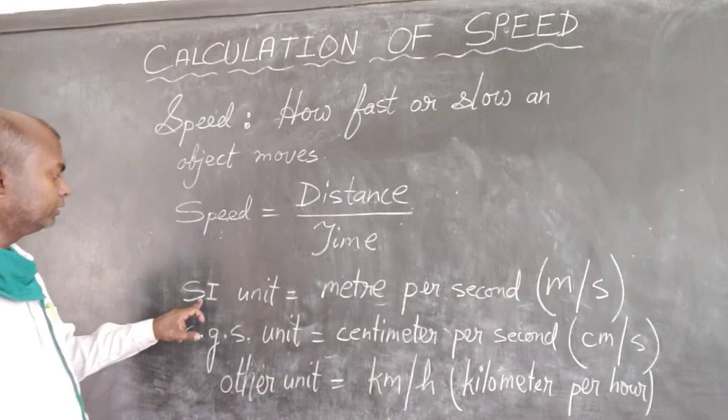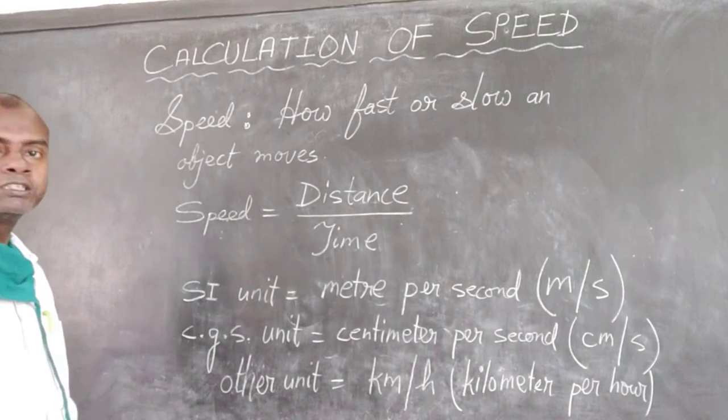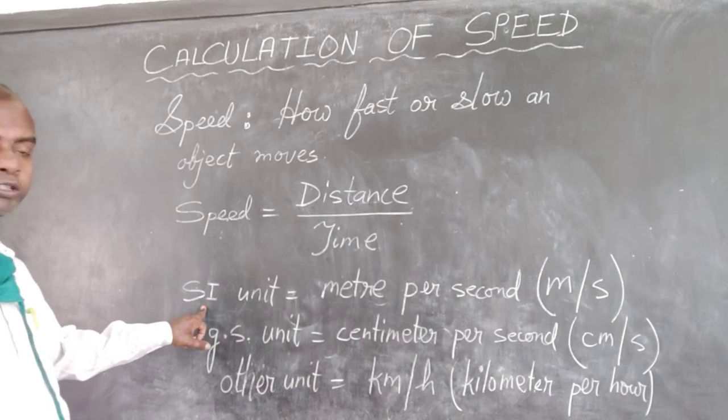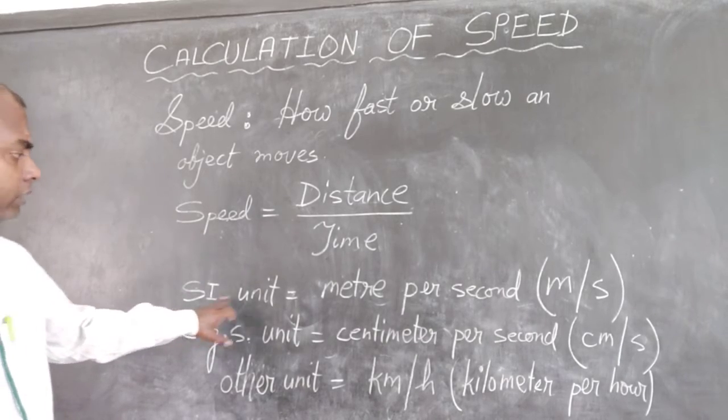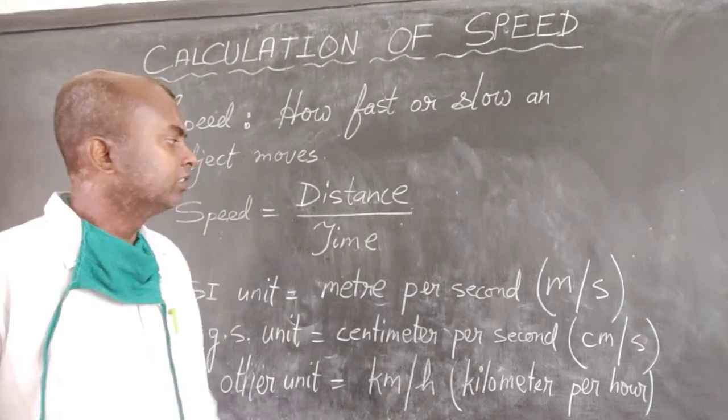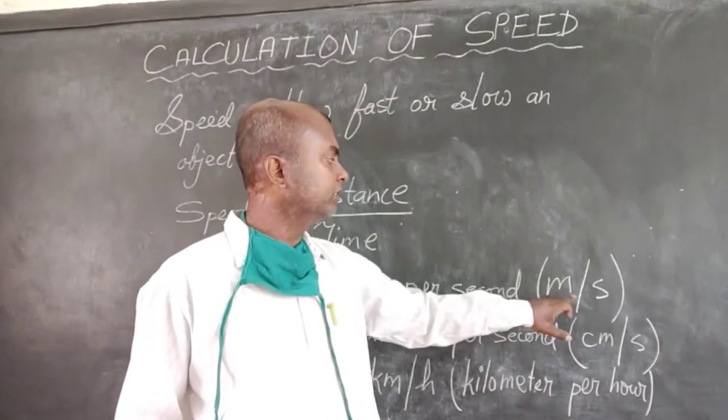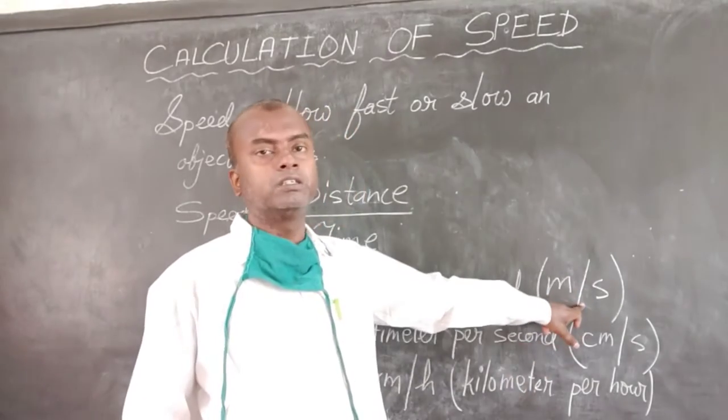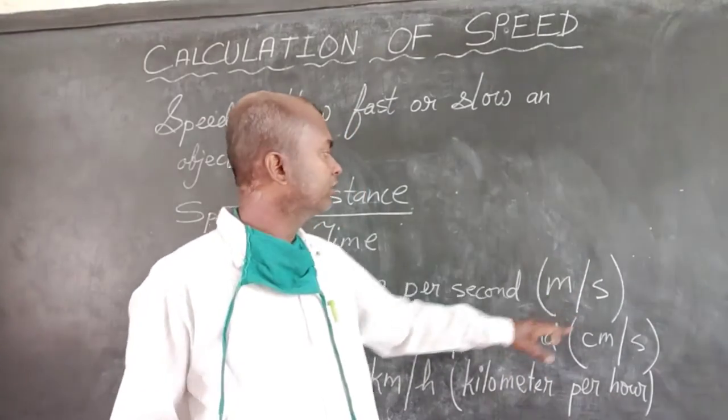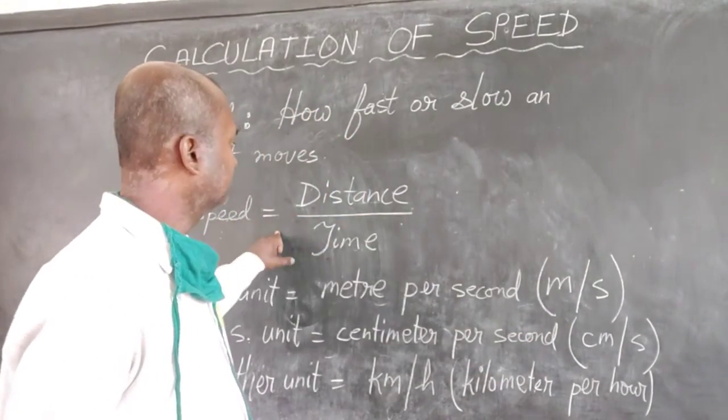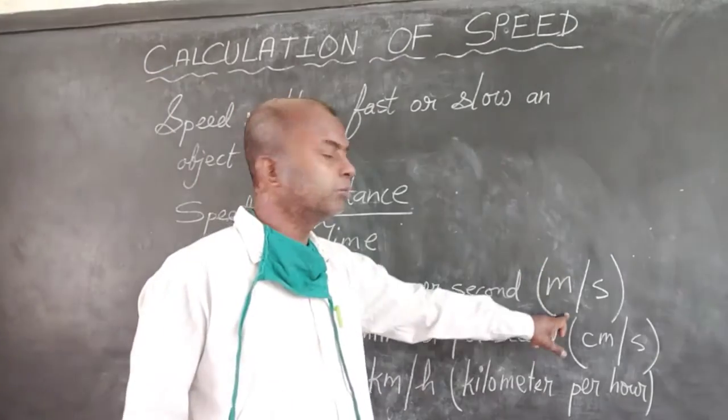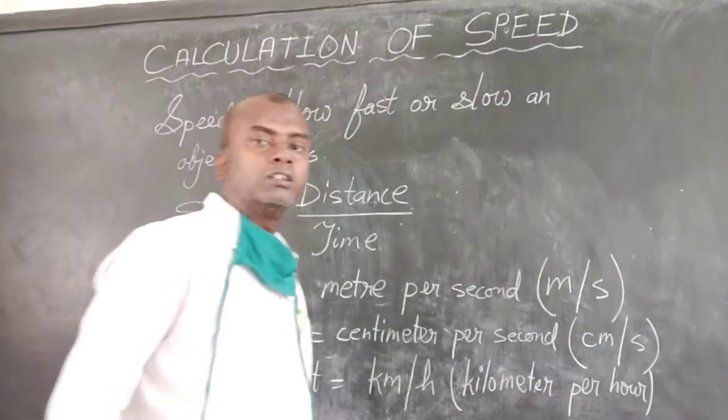So we have the units again. SI and CGS units. SI is Standard International units. In SI unit we have the unit as meter per second. Short for meter is m, second is s. So meter per second. This oblique is the division line. This line is symbolizing division. This oblique also symbolizes division.